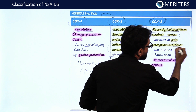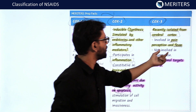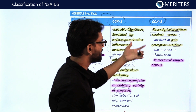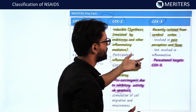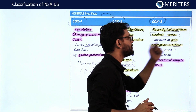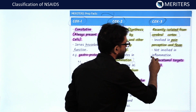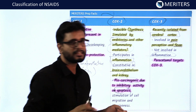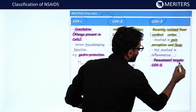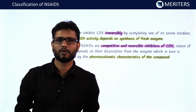COX-3 has been recently isolated from the cerebral cortex and is involved in pain and fever — that is, analgesia and antipyresis — but not in inflammation. The drug that targets COX-3, which is the favorite for all doctors, is paracetamol. COX-3 inhibition by paracetamol causes analgesia and antipyresis but no anti-inflammation.